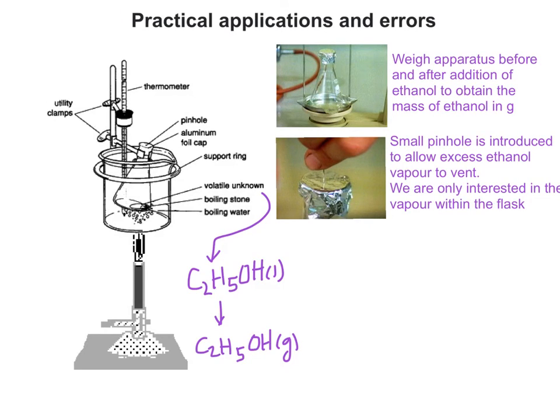At the start, when we've added the ethanol and we put the aluminium foil across the top of the conical flask, we introduce a small pinhole. We have the aluminium foil held in place by a rubber band, and the pinhole allows the excess ethanol vapour to vent. We're only interested in the vapour within the flask.